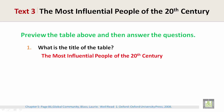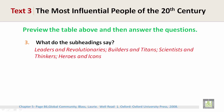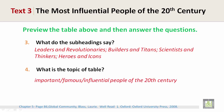Let's look at question one. What is the title of the table? The Most Influential People of the Twentieth Century. What words are in the top row of the table? Rank, Name, Percent, and Tally. What do the subheadings say? Leaders and Revolutionaries, Builders and Titans, Scientists and Thinkers, Heroes and Icons. What is the topic of the table? Important, famous, influential people of the twentieth century — those three things link together as the topic of the table.